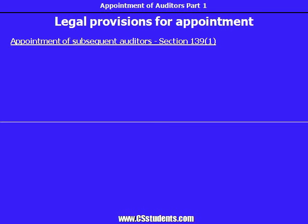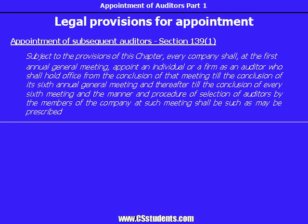Subsection 1 of Section 139 says: Subject to the provisions of this chapter, every company shall, at the first annual general meeting, appoint an individual or a firm as an auditor, who shall hold office from the conclusion of that meeting till the conclusion of its sixth annual general meeting, and thereafter till the conclusion of every sixth meeting. The manner and procedure of selection of auditors by the members of the company at such meeting shall be such as may be prescribed.